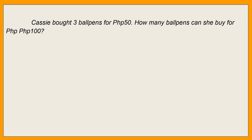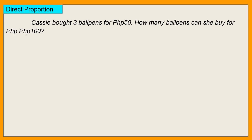Now, let's check this example. Cassie bought three ballpens for 50 pesos. How many ballpens can she buy for 100 pesos? Anong klaseng proportion ito? Three ballpens, 50 pesos. Eh, kung 100 na yung pera niya, eh, didadami yung ballpens na pwede niyang mabili. So this is a direct proportion.